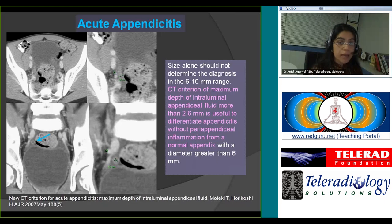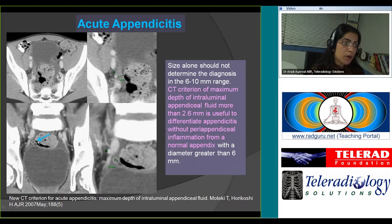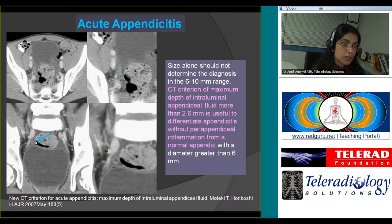You can distinguish appendicitis from a normal appendix — which can often also be greater than 6 millimeters — when the size is just borderline at 6 to 10 millimeters and there is no fat stranding. In that case, use the CT fluid depth criterion of greater than 2.6 millimeters.